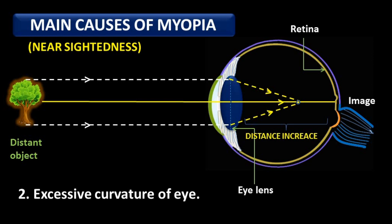These are the two main causes of myopia. One, elongation or increase in size — due to this, the distance between the eye lens and retina increases and focus forms before the retina. Two, excessive curvature of the eye — the focal length of the eye lens decreases, which results in the formation of the image before the retina.